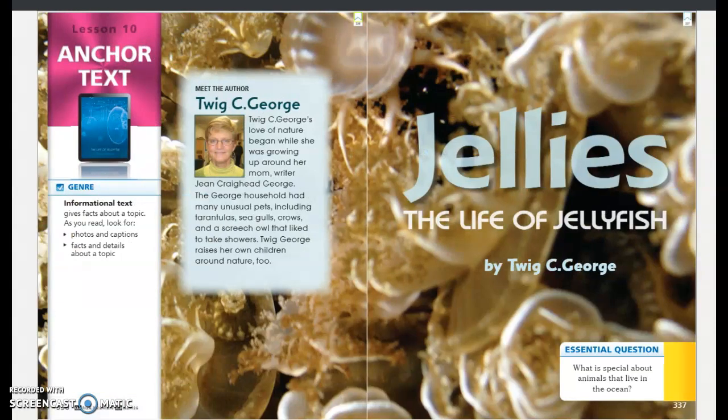So this week our story is called Jellies, The Life of the Jellyfish. And this is an informational text. An informational text gives you real information about real topics. There are photos with captions, and the details and the facts are true, and they provide information about the subject in the story.